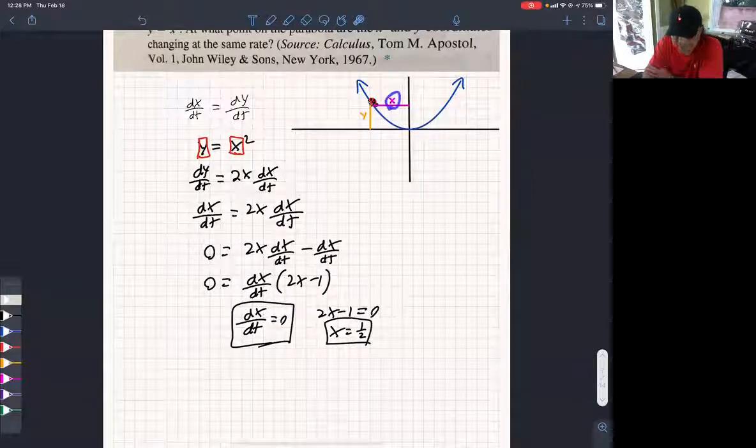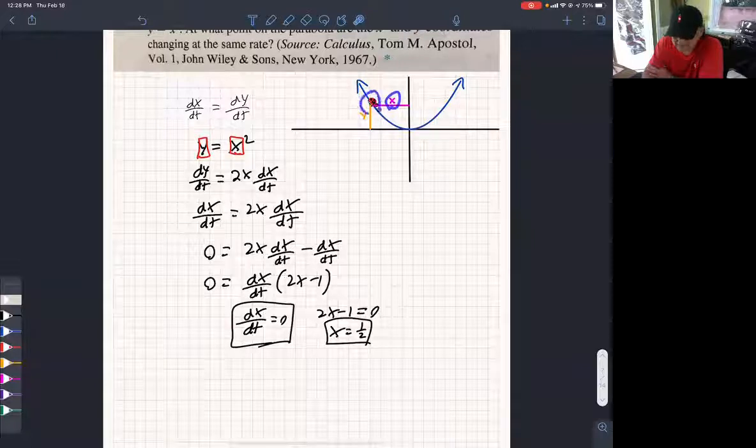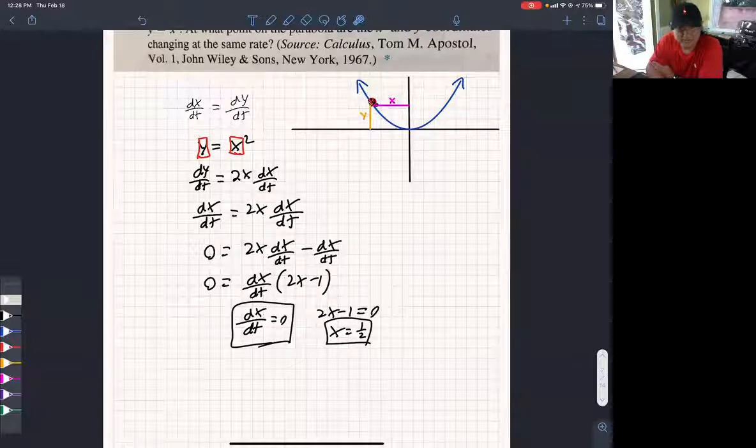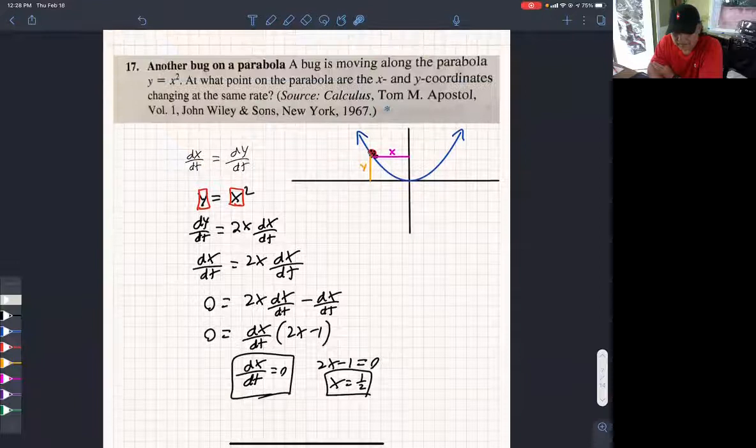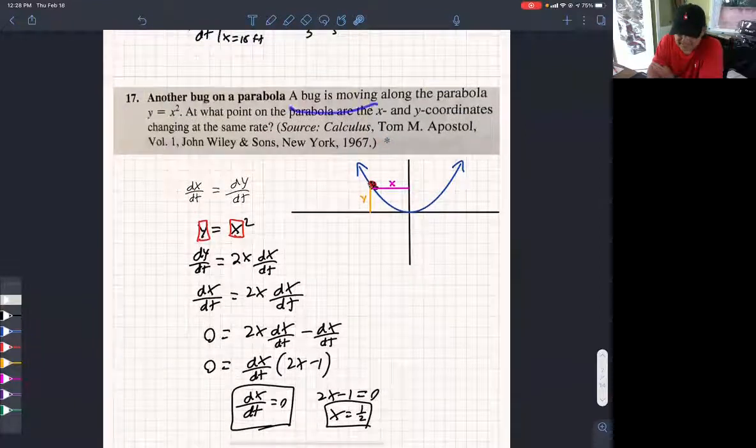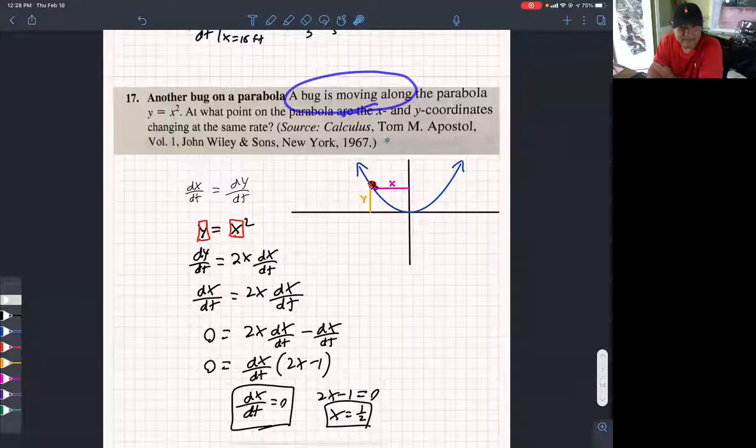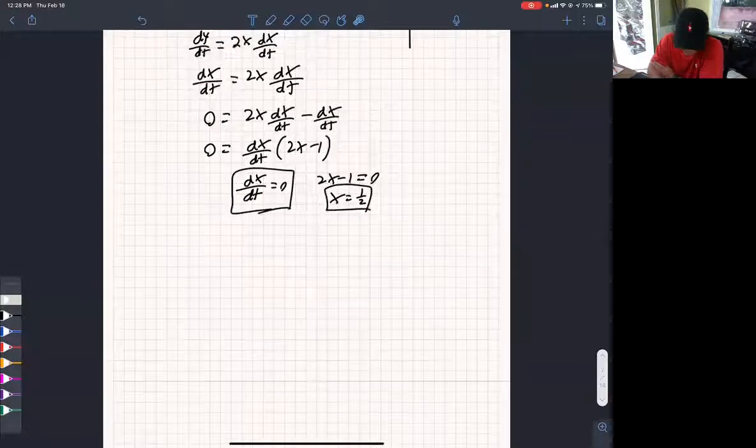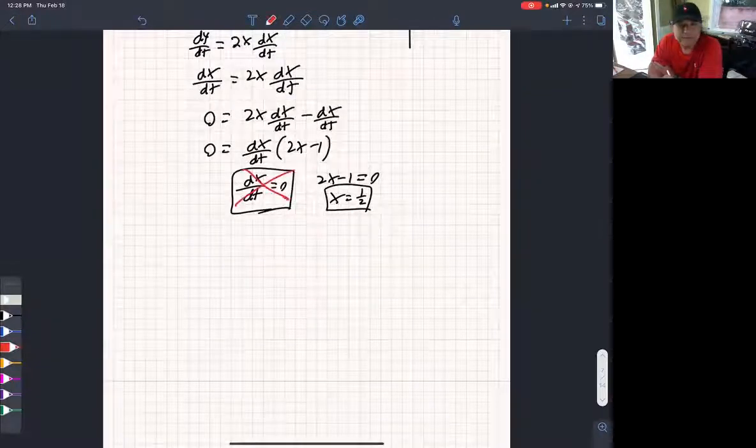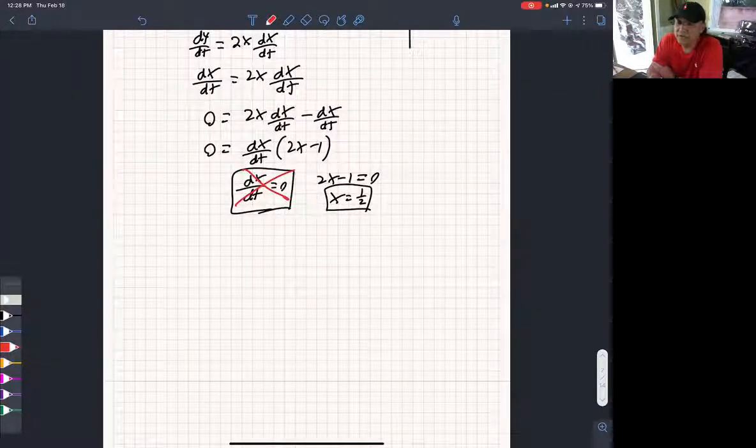That means x is not changing. If x is not changing, that means this bug is not moving, right? That's what it means. The bug's not moving. But this says the bug is moving. So it's not possible for dx/dt to be 0. But it's true, if the bug stops moving, dx/dt and dy/dt are the same. They're both 0.